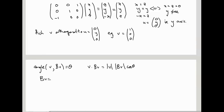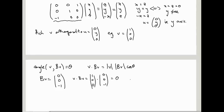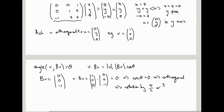BV is just the first column of B (since B times (1,0,0) gives the first column), which is (0, 0, -1). So V · BV = (1,0,0) · (0,0,-1) = 0. Since both vectors have non-zero length, cos θ = 0, meaning they're at right angles. So it's a rotation by either π/2 or 3π/2.